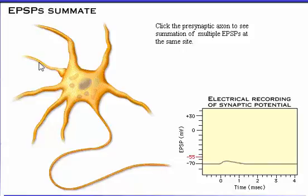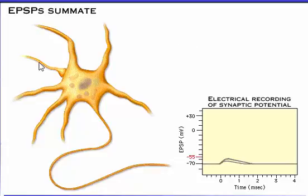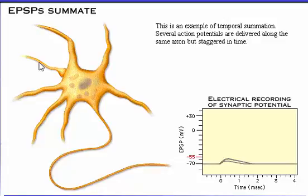Several action potentials are delivered along the same axon but staggered in time, producing summation of multiple EPSPs at the same site.